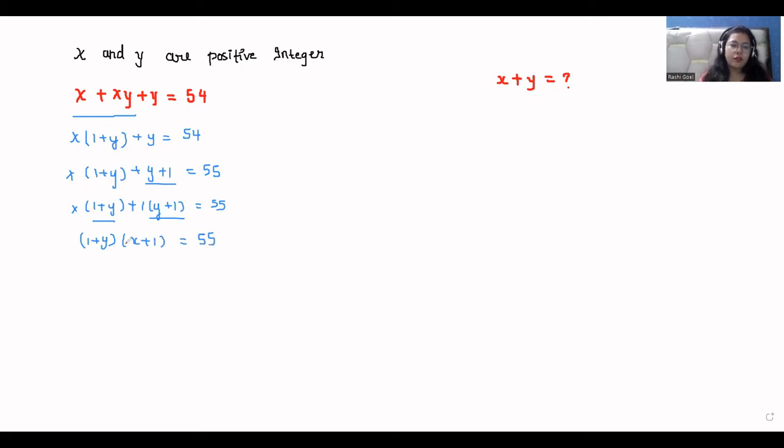Now we have two values. When we multiply these two brackets, we get 55. So we have to think: which two numbers can we multiply to get 55? If I find the factors of 55, I get 1 times 55 equals 55, 55 times 1 equals 55, 5 times 11 equals 55, and 11 times 5 equals 55.